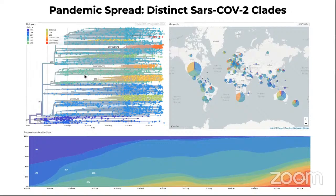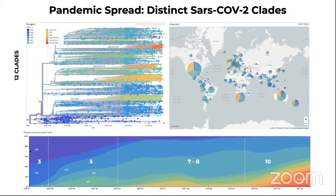Now we have a lot more information about what happened after the virus was introduced into the human population. This data from NextStrain, a website displaying genomic information collected from around the world, shows the relationship between different clades that are emerging. Over one year — from January 2020 to January 2021 — there has been a gradual increase in clearly defined clades. Starting with three clades until about February, then about five until May, and today we are looking at about 10 major clades that are known.